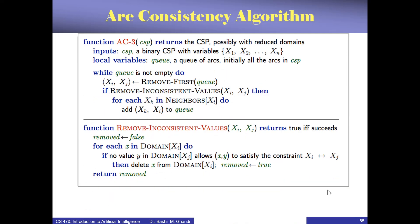There is an algorithm for arc consistency called AC3 — arc consistency number 3. The number is just the version from the inventor; it was the third version that worked. AC3 takes a CSP and returns another CSP with reduced domains. With reduced domains, the solution can be found much more easily by our backtracking algorithm. The input is a binary CSP with variables X1 to XN, and it uses a queue to keep the arcs.